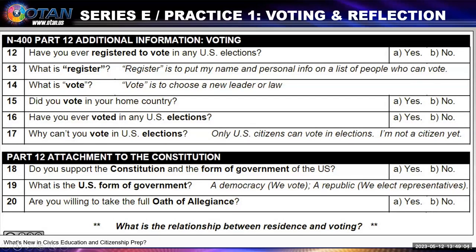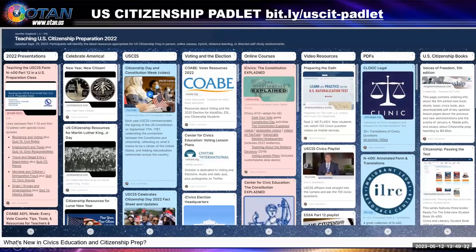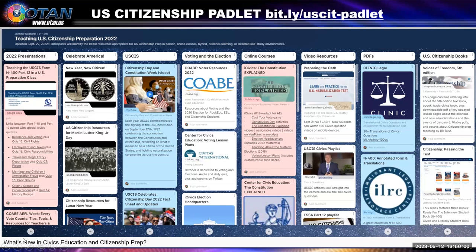I have a Padlet that I've been updating with more information about voting and online courses, and resources that teachers can use in their classrooms. I try to put my presentations up there. That's at bit.ly/USCIT-Padlet. There are resources there about voting connections, including questions like: have you ever voted? Did you vote in your home country? Why can't you vote in the United States? — one of the questions that USCIS officers frequently ask. And what is the relationship between residency and voting?